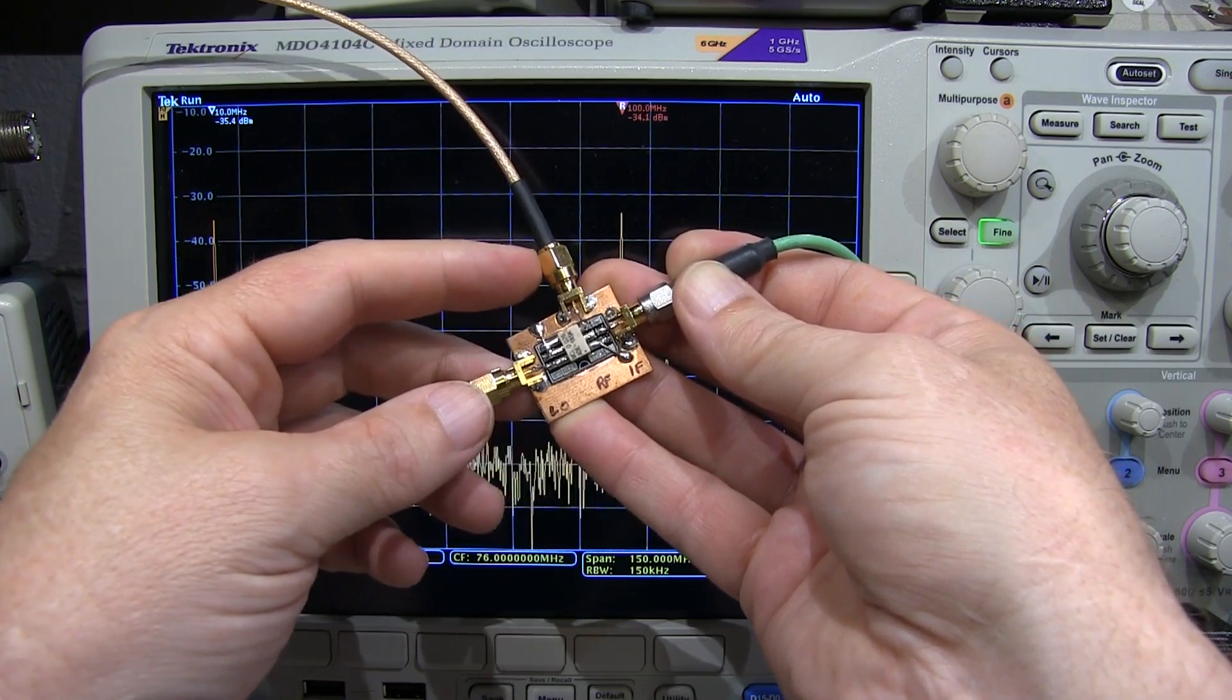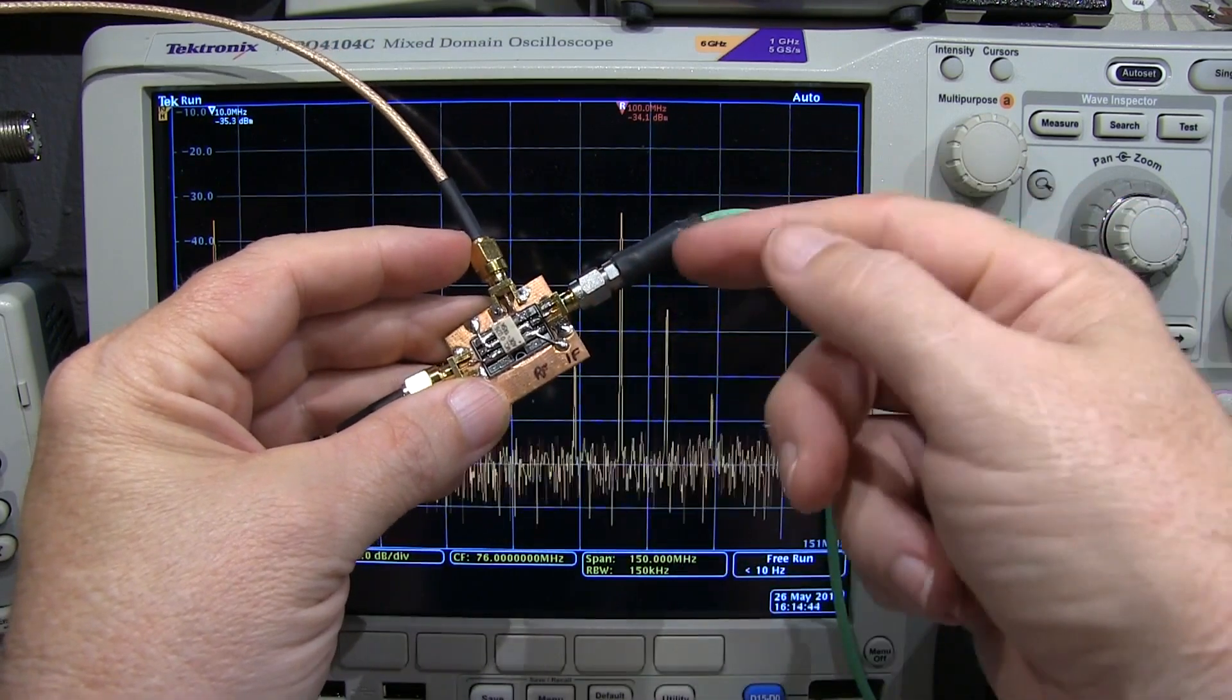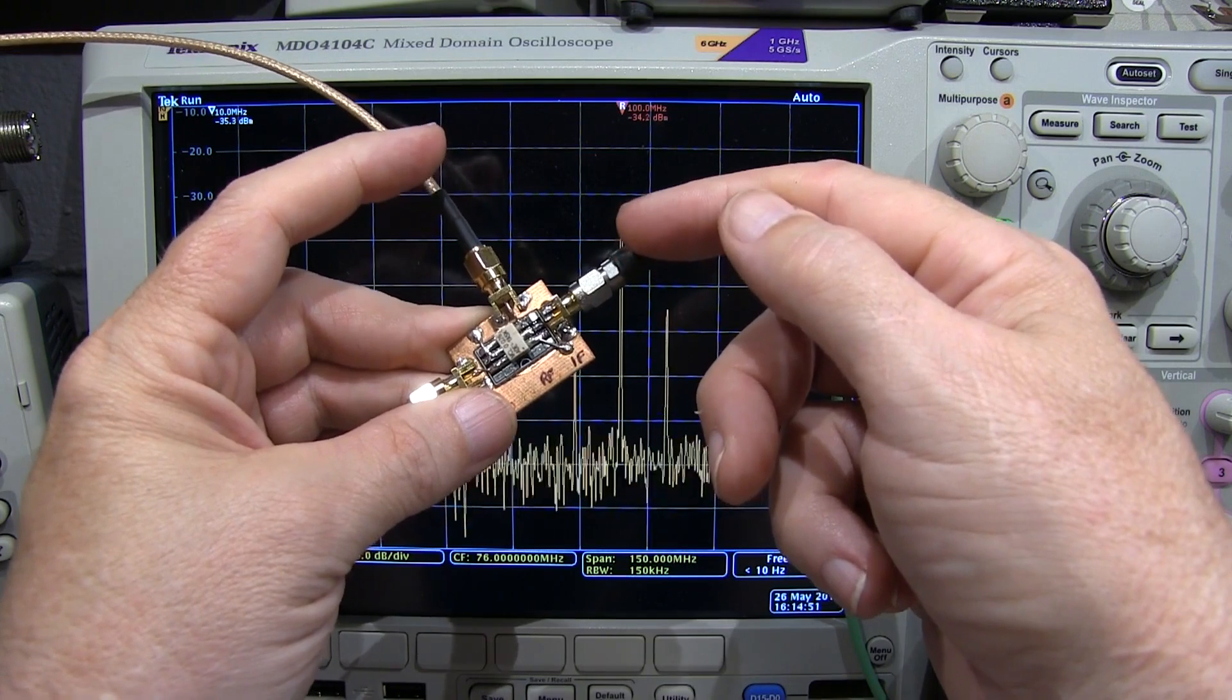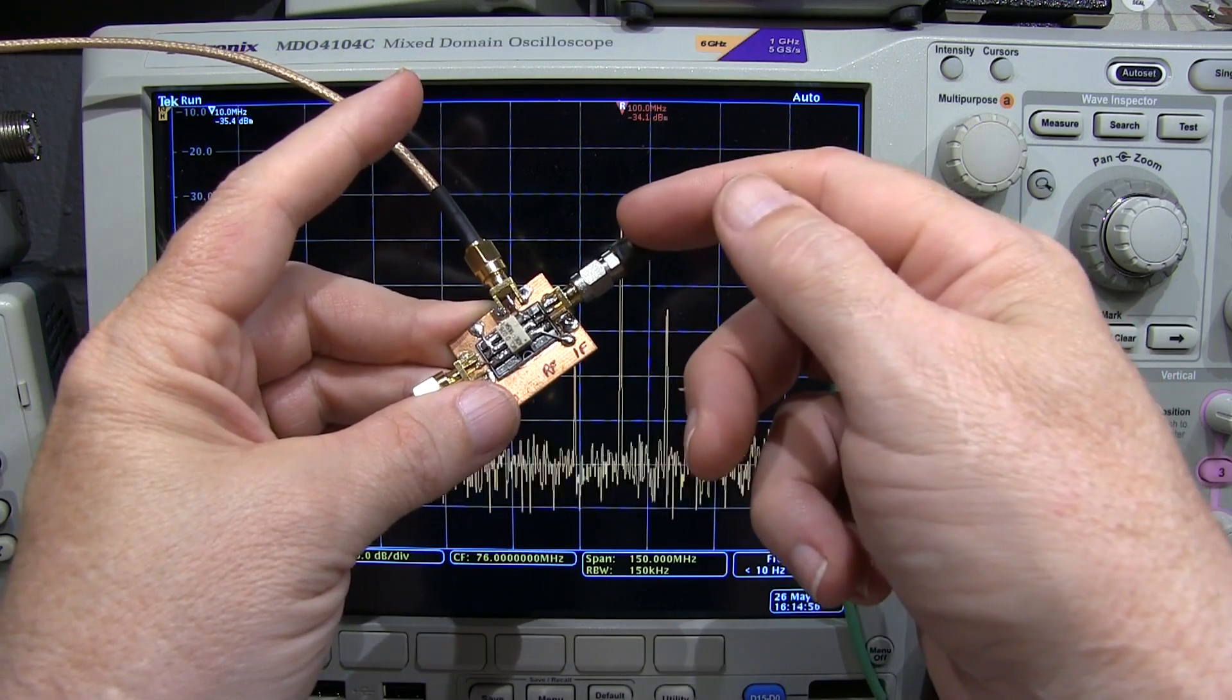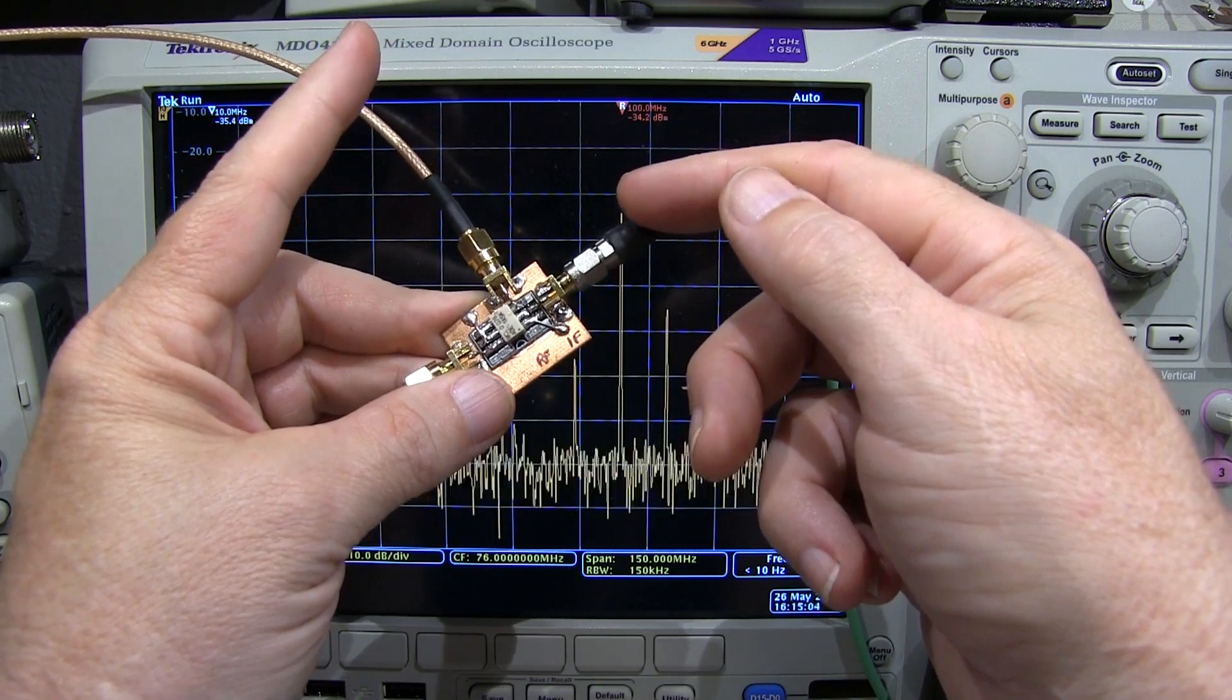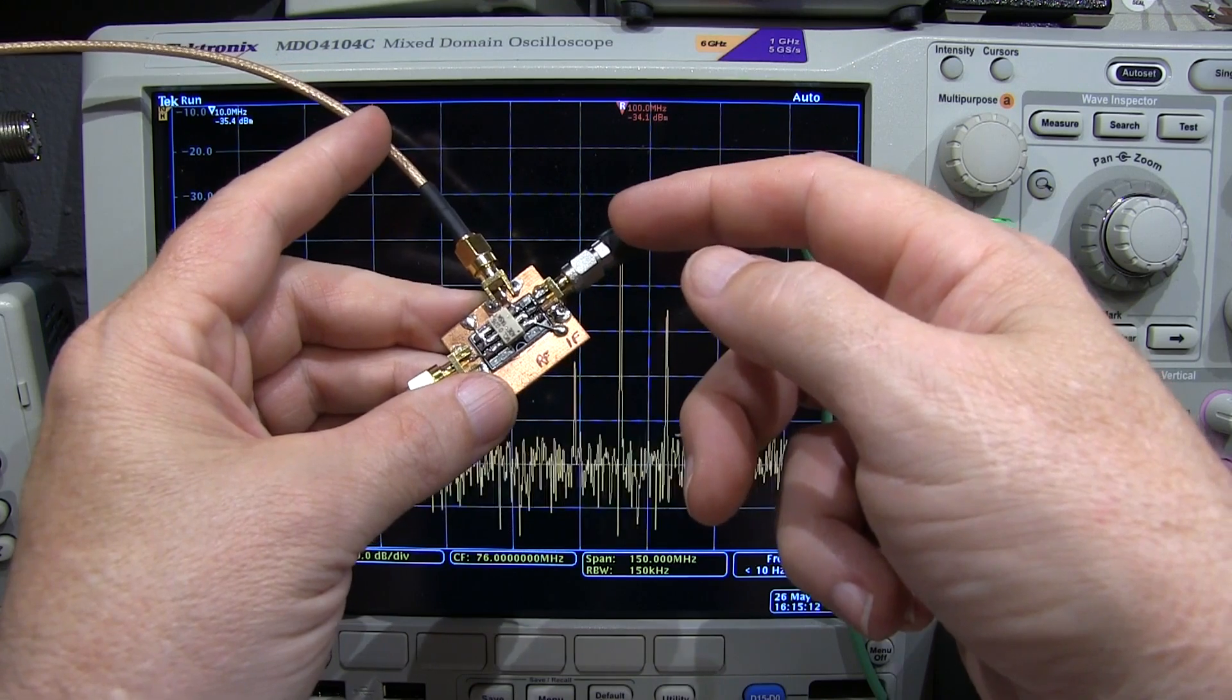Now, one measure of that is the 1 dB compression point. And the 1 dB compression point is where, as you go up in RF power, the IF output, the converted output, will track that one for one. There'll be the loss there, in this case about 5.3 dB. But as you go up higher in power, eventually, the RF output, or the IF output, won't go up as much as the increase of the RF input power. Once that deviates by more than a dB, for example, the conversion loss goes from 5.3 to, say, 6.3 dB, that's the 1 dB compression point.